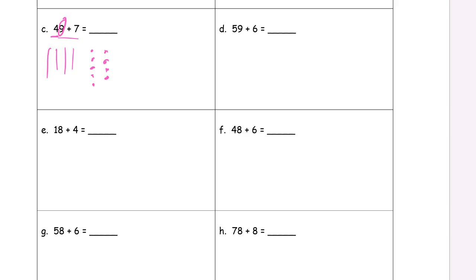If you don't need to watch this, then just keep using the number bond strategy and skip ahead to the next problem. But here, we need one more, right? So we have to add seven more. Counting those out, this makes another ten. So we have five tens — that's fifty — and six ones left: fifty-six. That's an example of what we're doing using pictures that you can count.